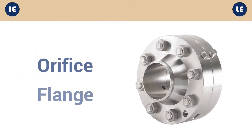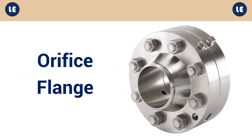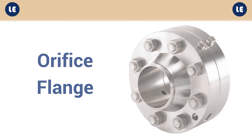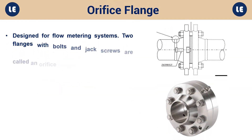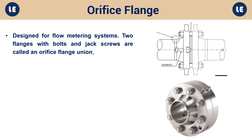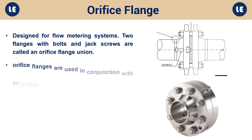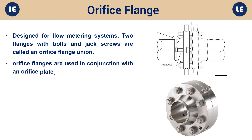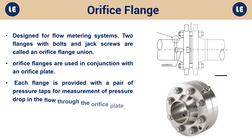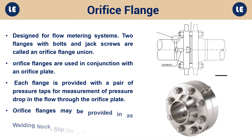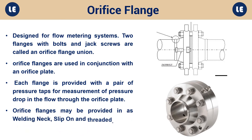Orifice flange: Designed for flow metering systems, two flanges with bolts and jack screws are called an orifice flange union. Orifice flanges are used in conjunction with an orifice plate. Each flange is provided with a pair of pressure taps for measurement of pressure drop in the flow through the orifice plate. Orifice flanges may be provided as welding neck, slip-on, and threaded.